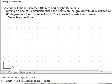We note that the cone is lying on its circumferential base points on the ground and the axis is inclined at 60 degrees to VP.